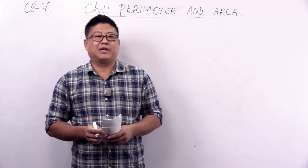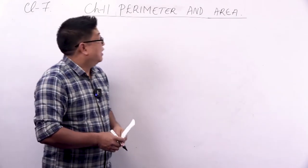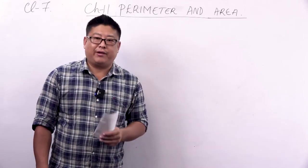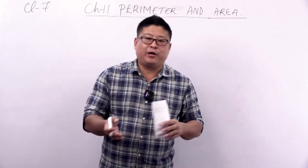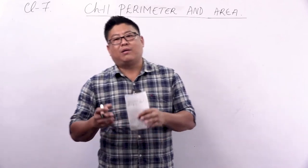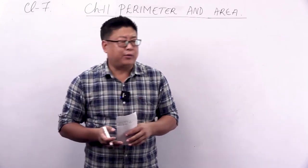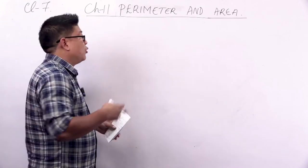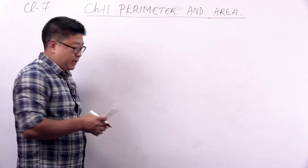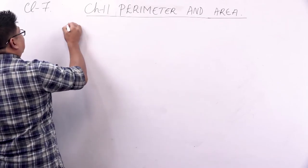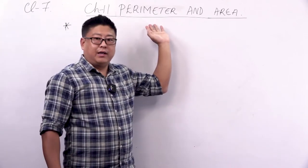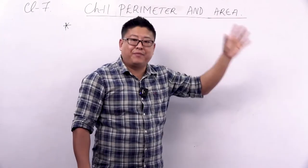Hello, dear children, and welcome to mathematics class for class 7. Today we'll be starting with a new chapter — chapter 11, Perimeter and Area. In a previous class we have already learned about what perimeter is and what area is. Today we'll do a quick recap before we move on to the main concepts. In this lesson we are going to learn about the various formulae used for perimeter and area of different closed figures.